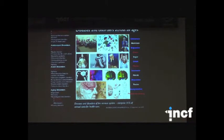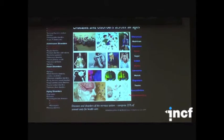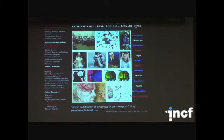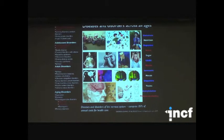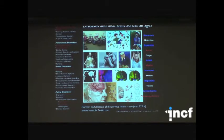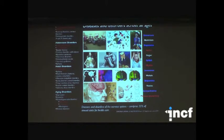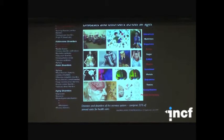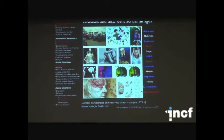There are so many, such a diversity of diseases and disorders of the nervous system across all ages — across development, in adolescent ages, adulthood, and as we age. Diseases and disorders of the nervous system comprise about 35% of the annual cost for health care, at least in Europe. This is a strong motivation to address disease in the brain, and in doing so will also further our understanding of brain function.